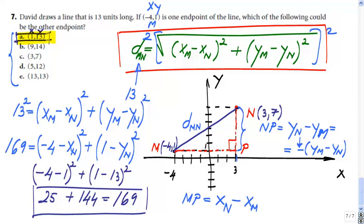This is the answer. If you're not confident, you can try the other options to verify. And even if you swap which point is M and which is N, it still works: (1 minus negative 4) squared is 5 squared equals 25, and (13 minus 1) squared is 12 squared equals 144. 25 plus 144 is 169, which is 13 squared. You are good.